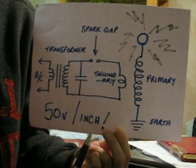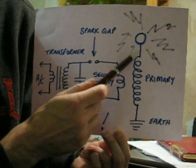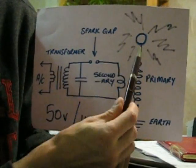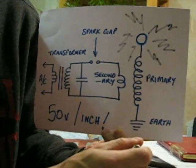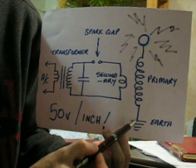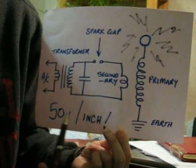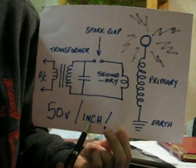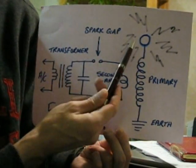What Tesla discovered was if you put an aerial up into the atmosphere like a hundred foot aerial and then you bury the ground in the earth, the size of this aerial from the bottom where it's grounded to the top, you can capture approximately 50 volts per inch of free radiated energy.